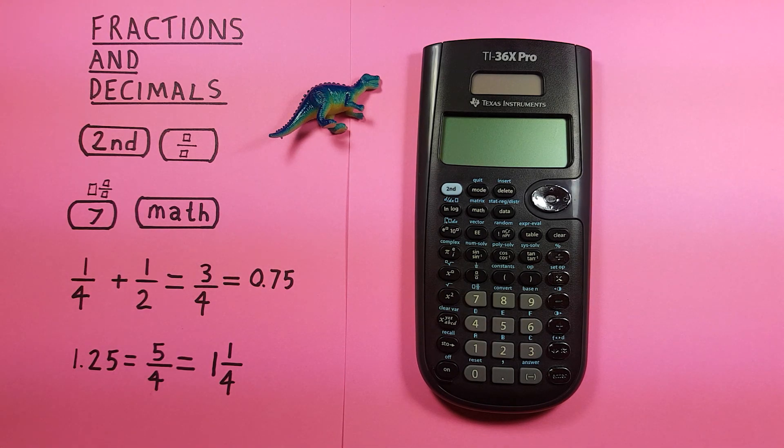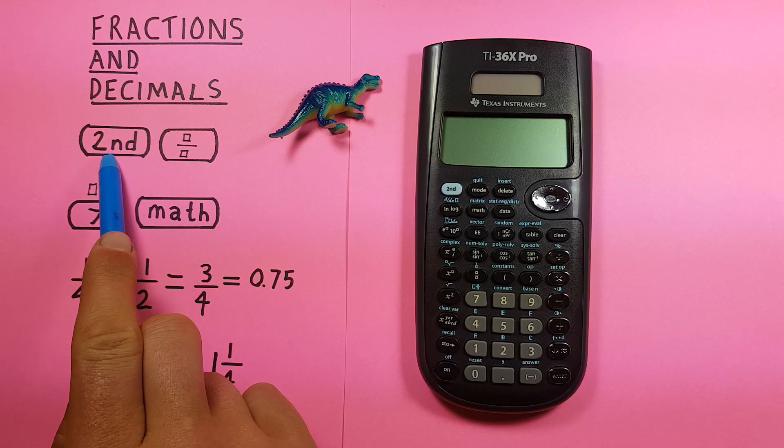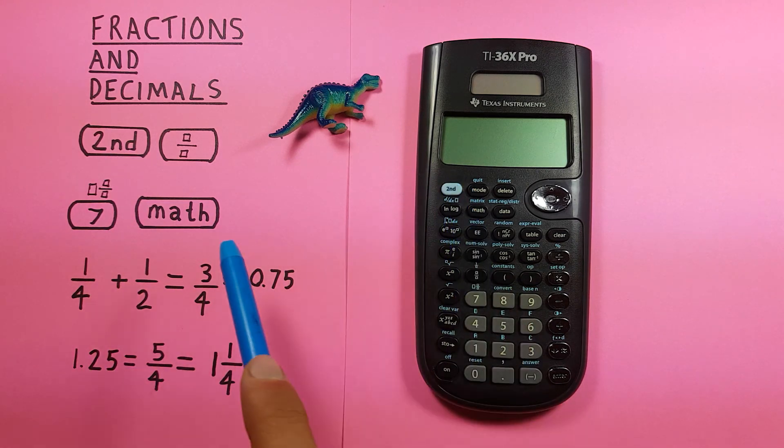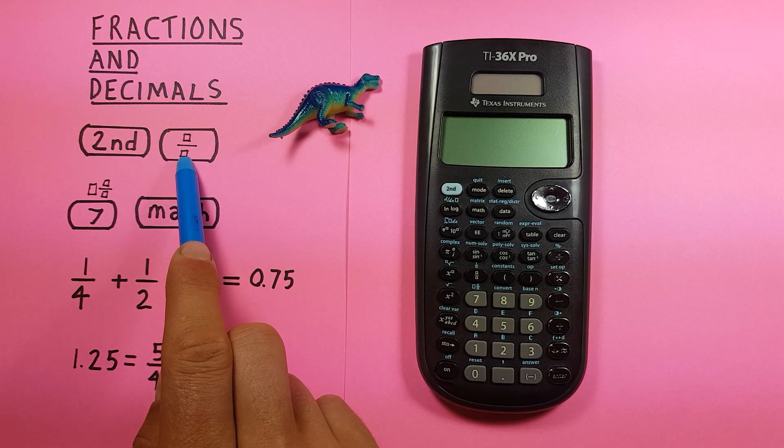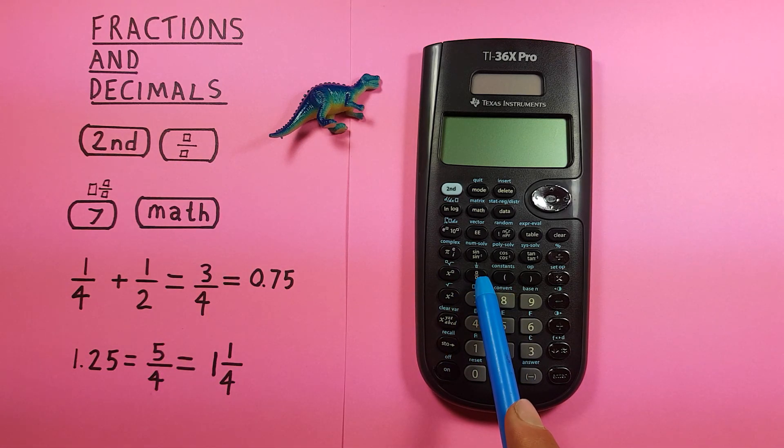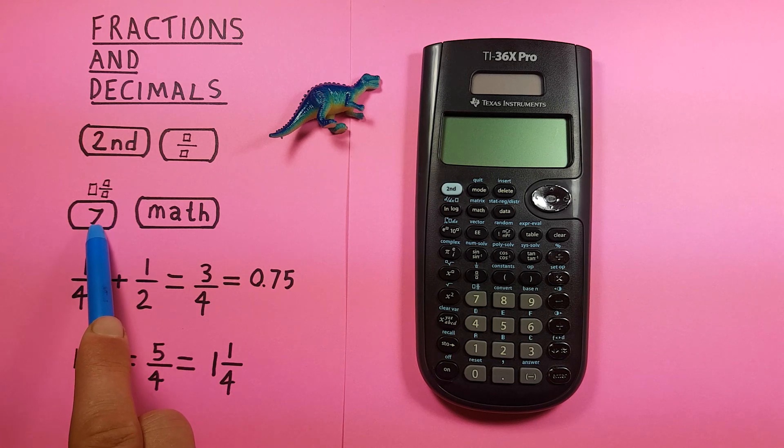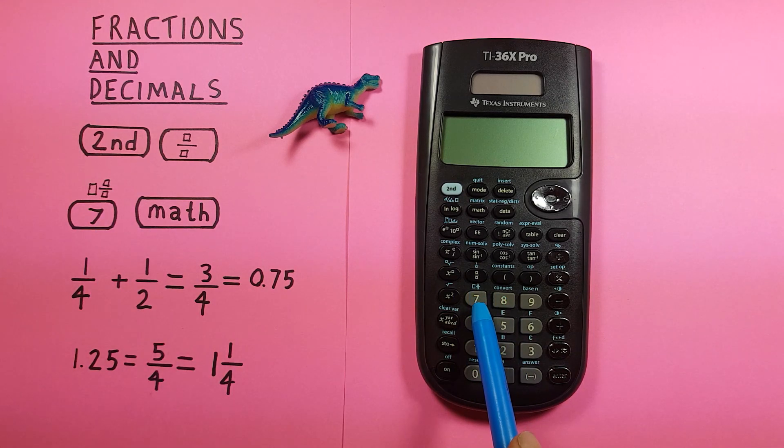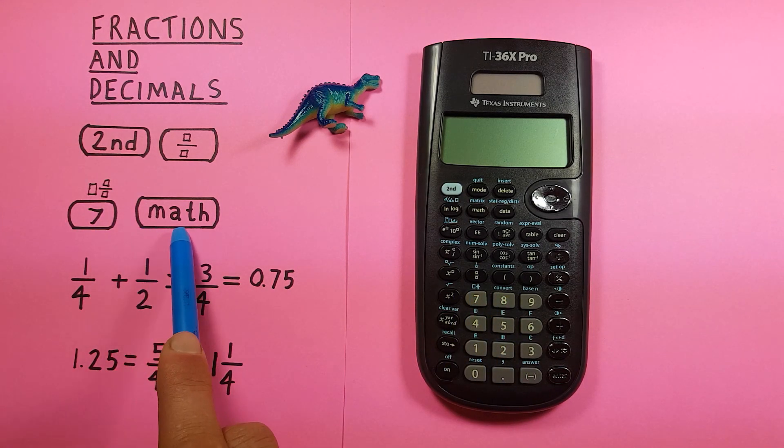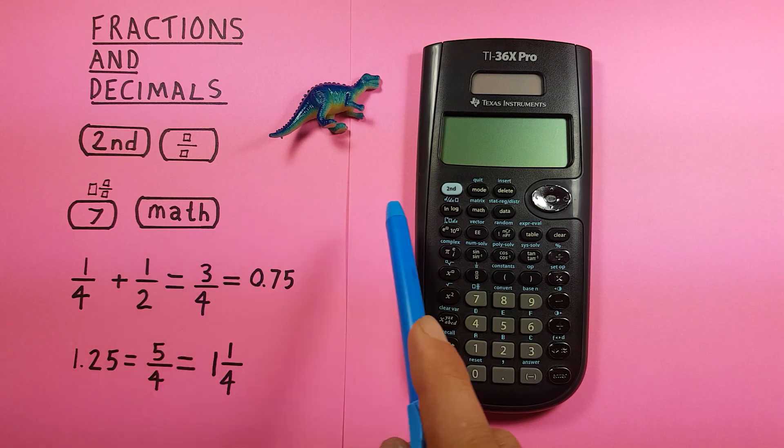To do this, we'll use the second function key located here, the fraction key here, the mixed fraction key above the 7 here, and the math key here.